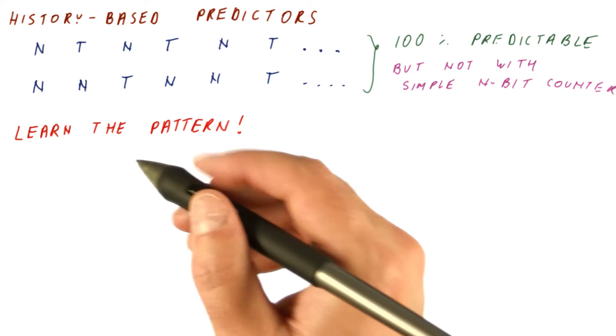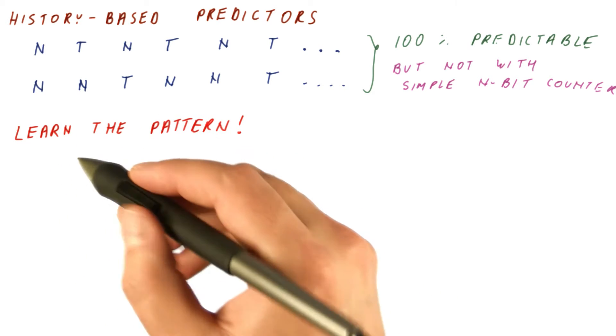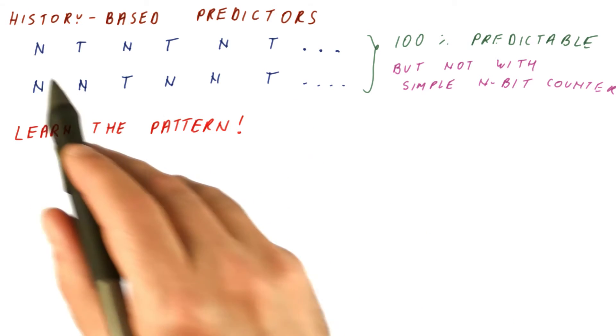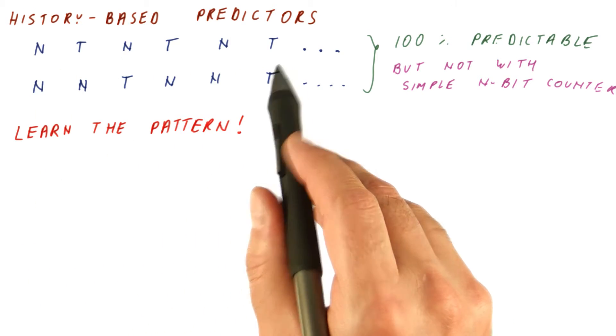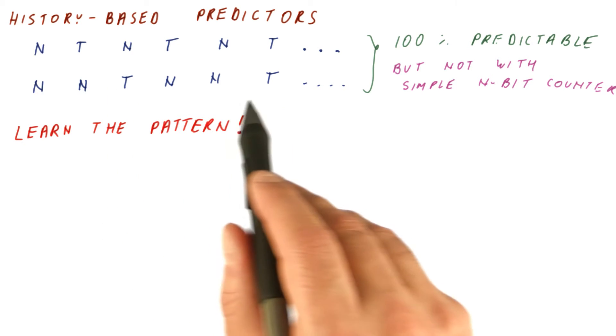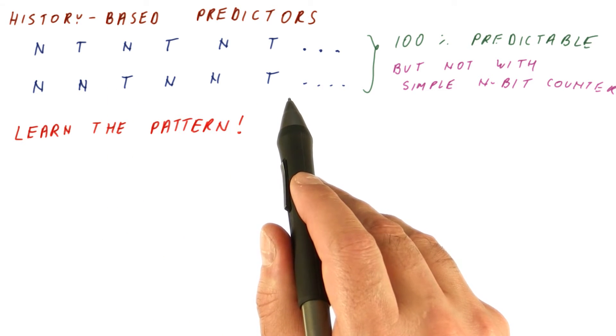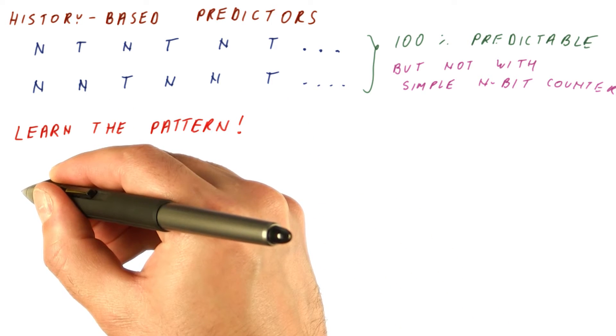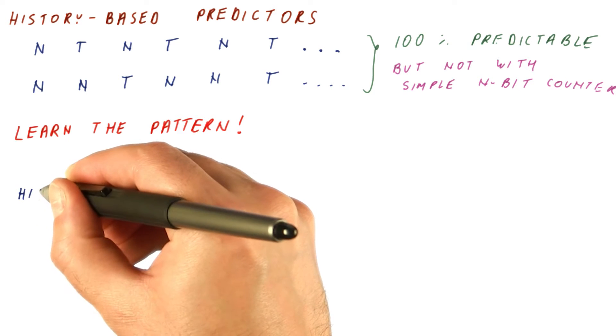How do we learn the pattern? Well, we don't just look at what's the majority outcome here. For example, here there is no majority outcome at all. Here, not taken is the majority outcome. But takens happen very frequently. So if we just look at what's the majority behavior, we'll have a lot of mispredictions. What we want to look at is the so-called history of the branch.